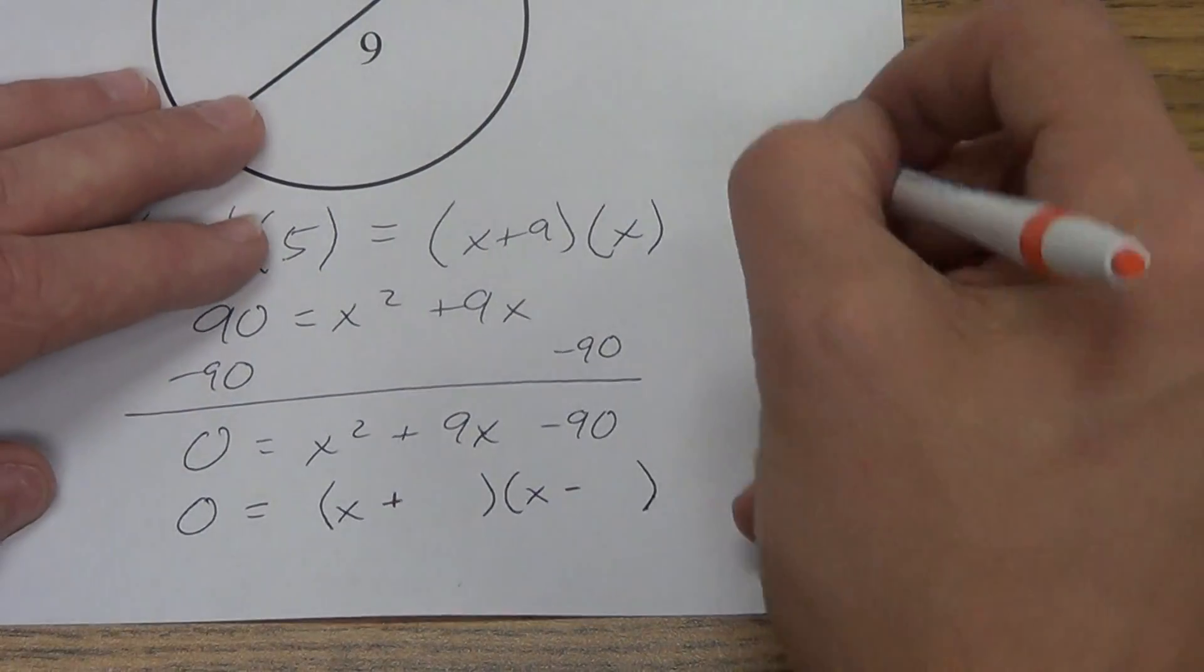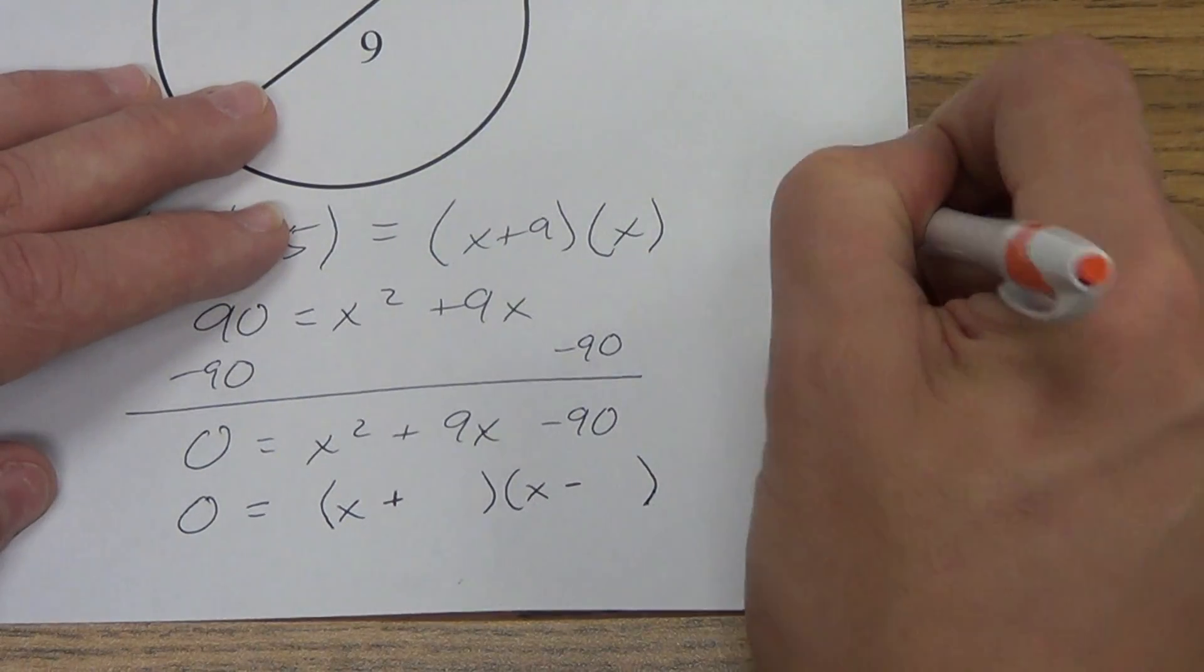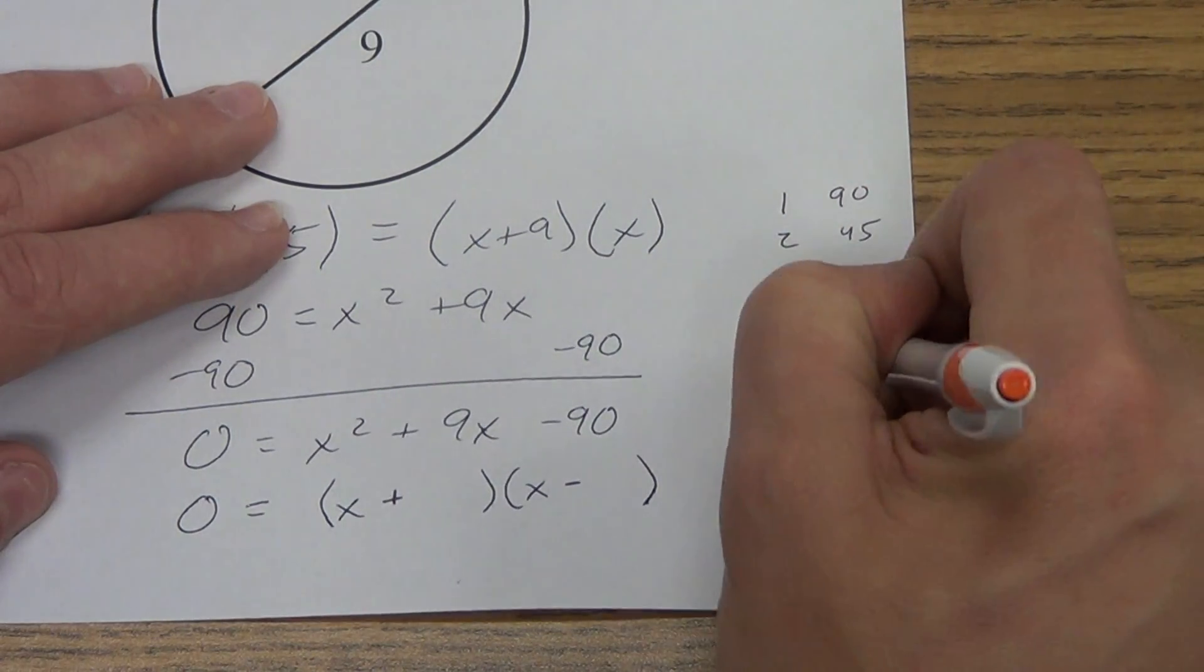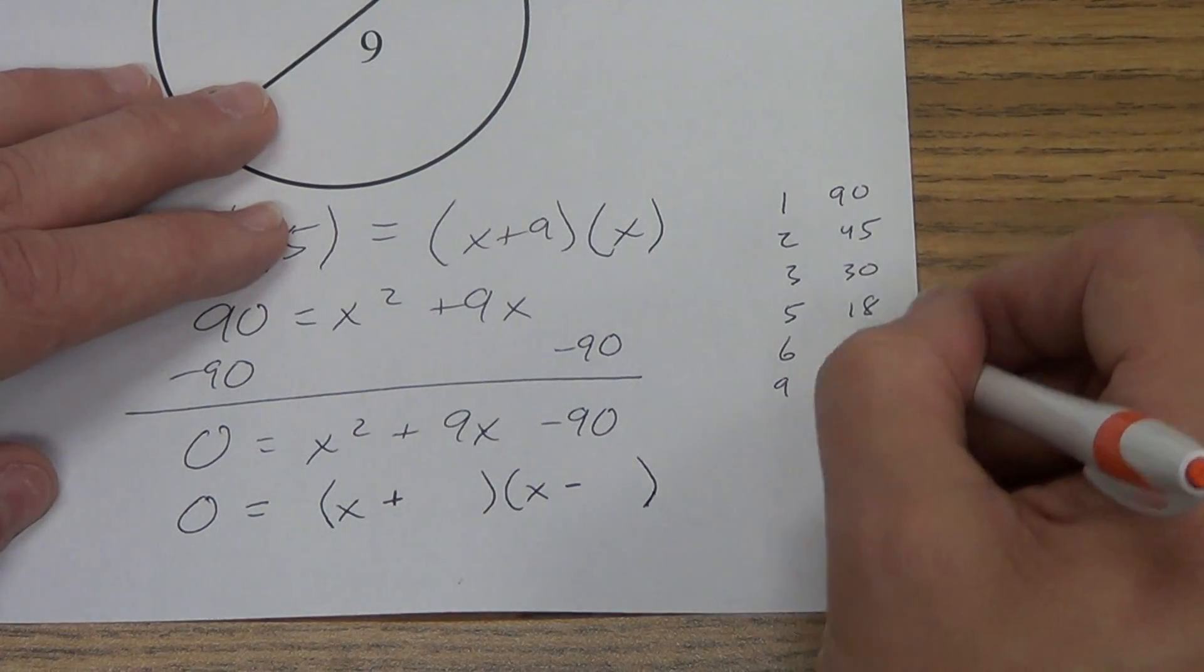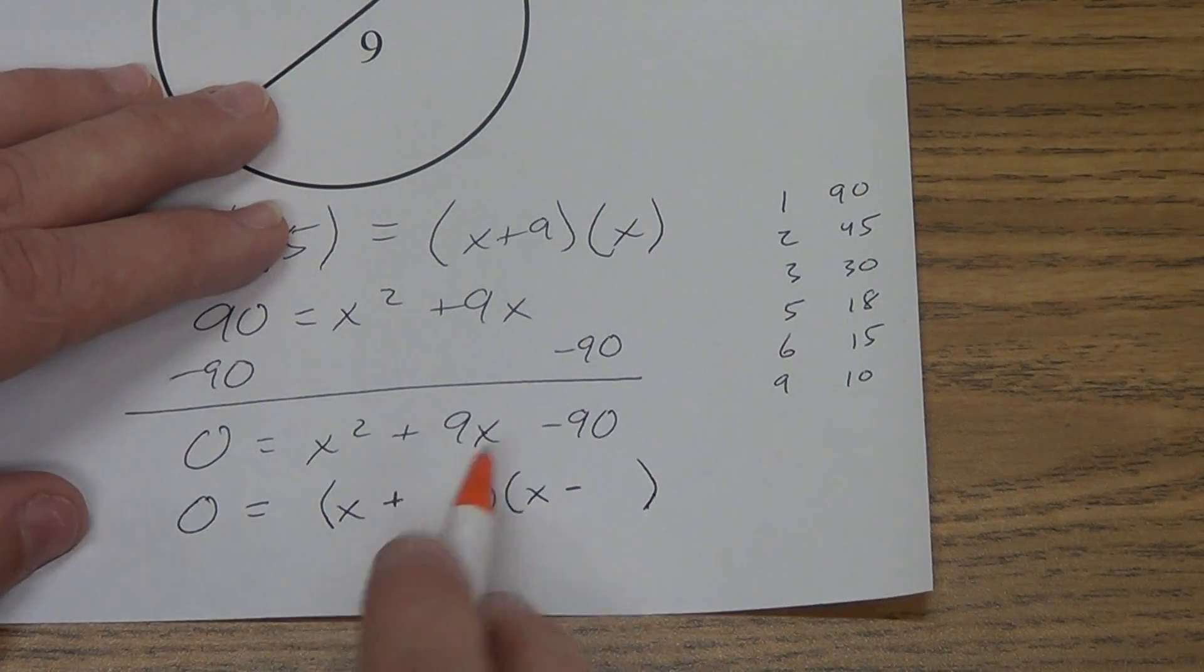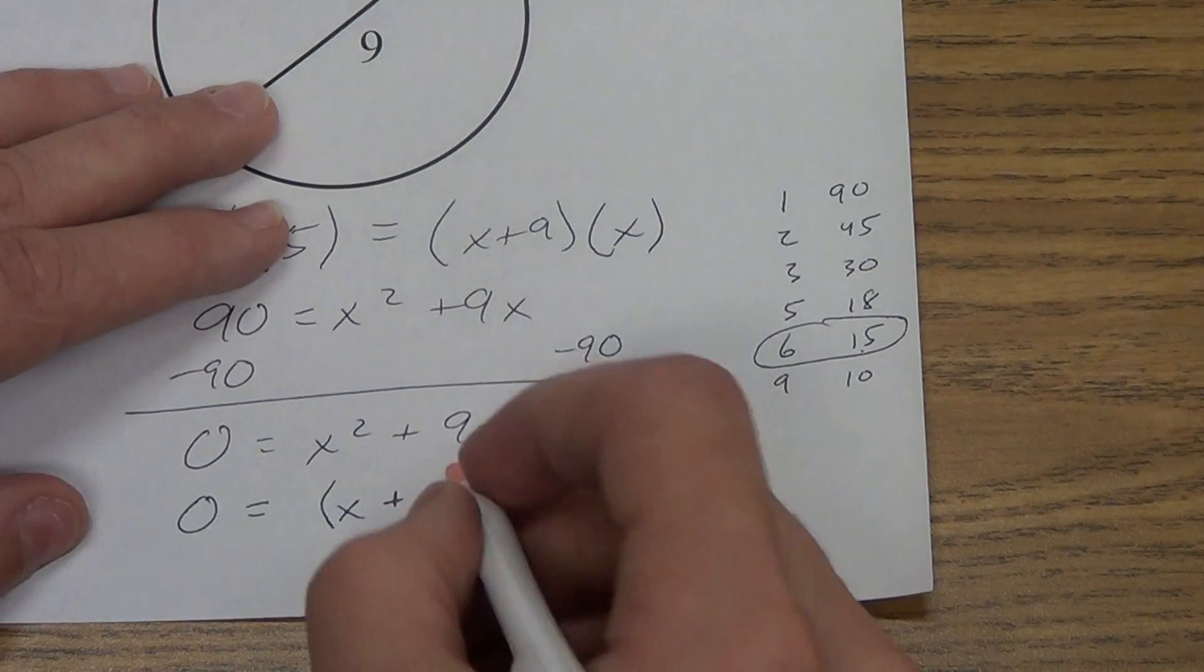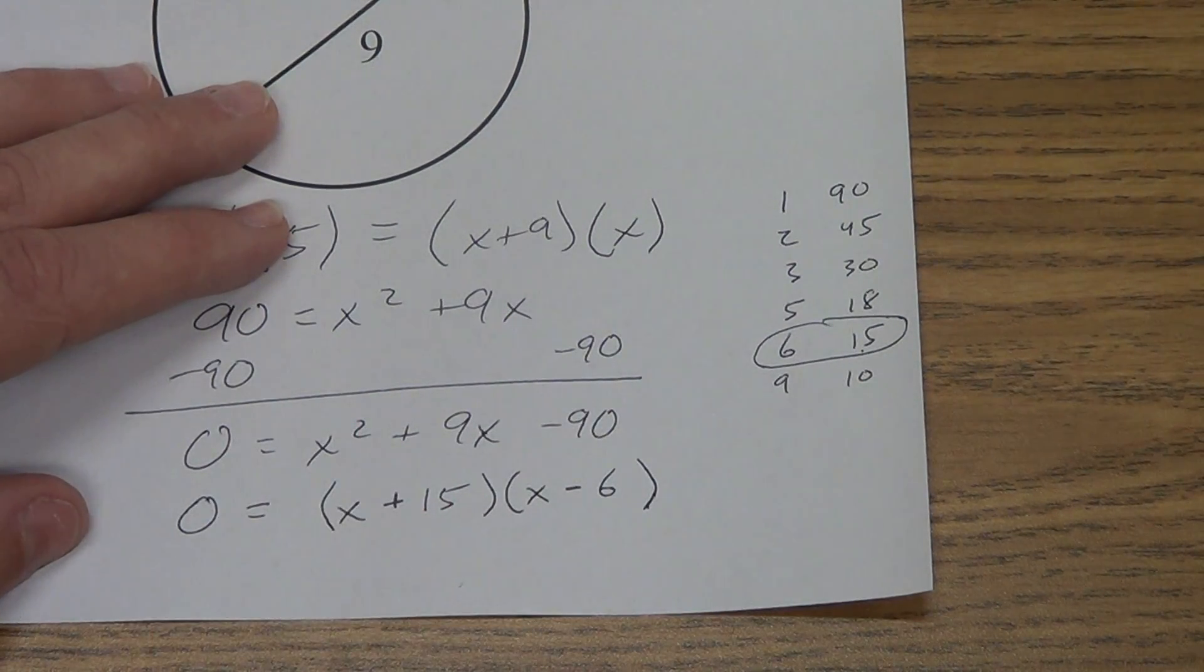If you can't think of them, just make yourself a list. 1 times 90, 2 times 45, 3 times 30, 5 times 18, 6 times 15, 9 times 10. Which of these numbers are going to subtract to give me 9? Well, it's the 6 and the 15. And since the 9 is positive, I need to make sure I use a positive 15 and a negative 6. If I went with a negative 15 and a positive 6, that would give me a negative 9 right here.